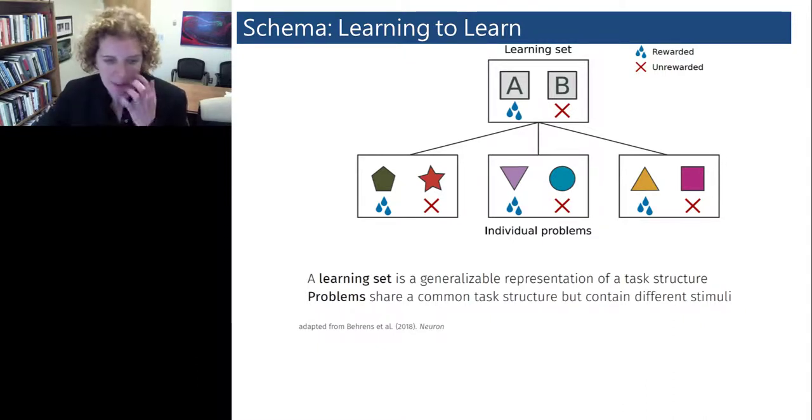In this example, through the learning of individual problems, which are shown at the bottom, the subject can develop a learning set as shown at the top. This learning set represents the rule that on each problem, one stimulus will be rewarded and one will not. This process of learning to learn is thought to facilitate new learning by reducing the dimensionality of the space that the organism has to search in order to adapt to novel problems.